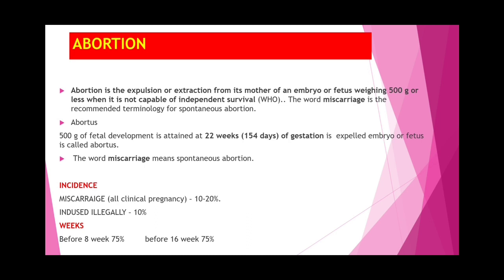The fetal weight is 500 grams or less, meaning it is not capable of independent survival, according to WHO. The word miscarriage is the recommended terminology for spontaneous abortion. Miscarriage means spontaneous abortion, and abortus means fetal weight less than 500 grams, at or before 22 weeks, i.e., 154 days of gestation — the expelled embryo is called abortus.